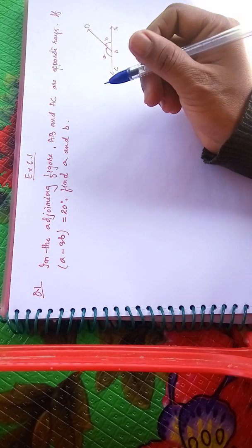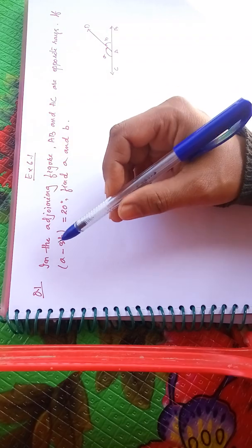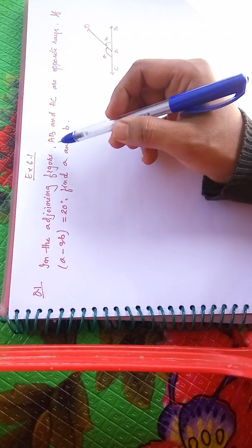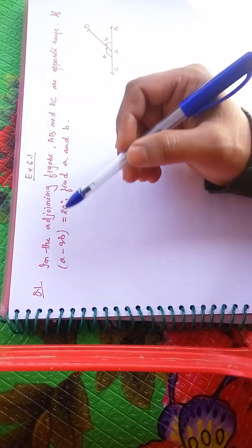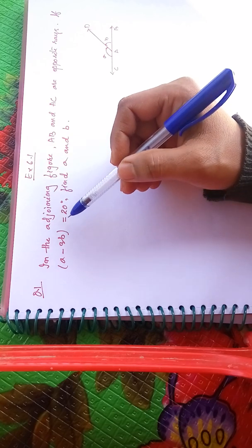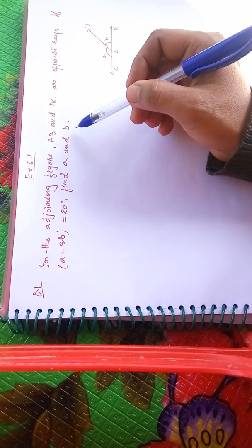Class 9, Exercise 6.1, Question No.1. In the adjoining figure, AB and SE are opposite rays. If A minus 3B is equal to 20 degrees, find A and B.